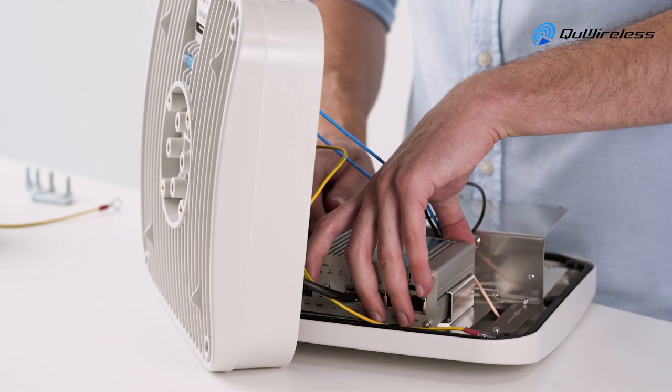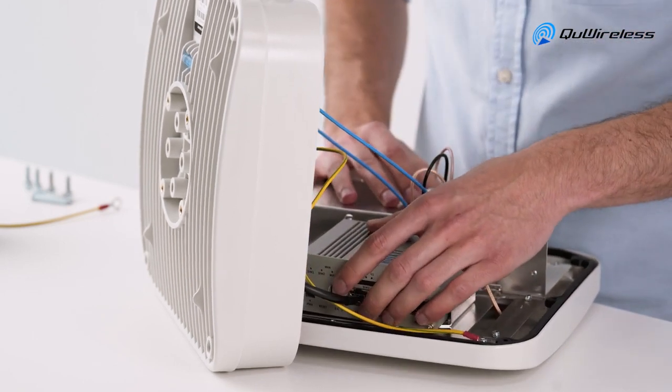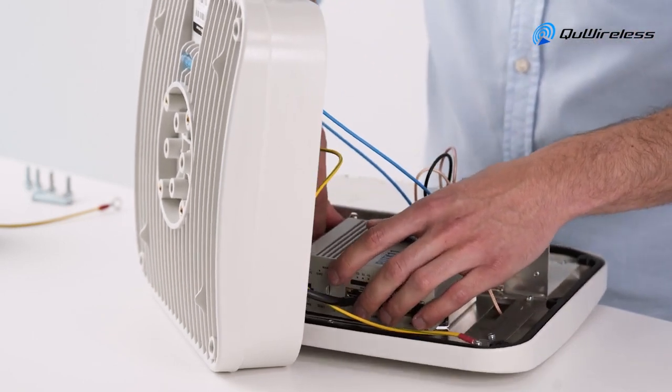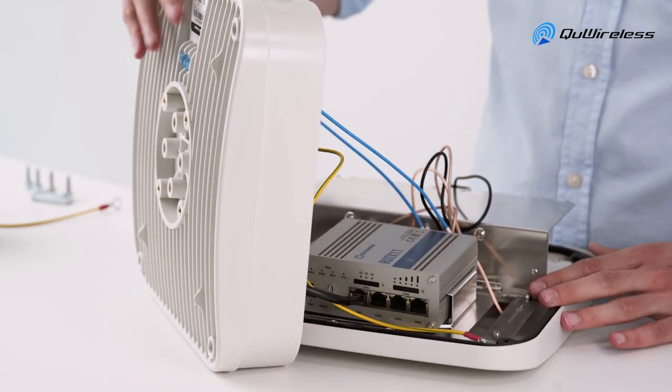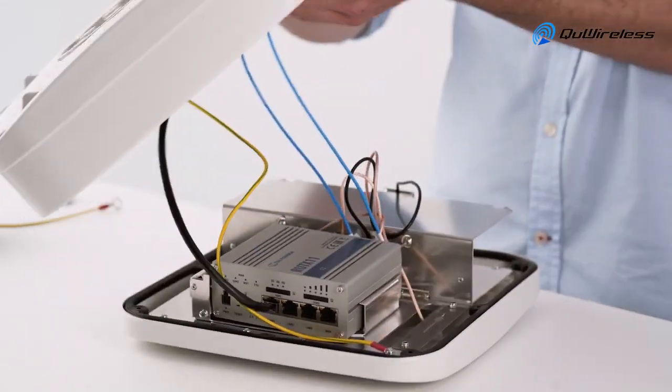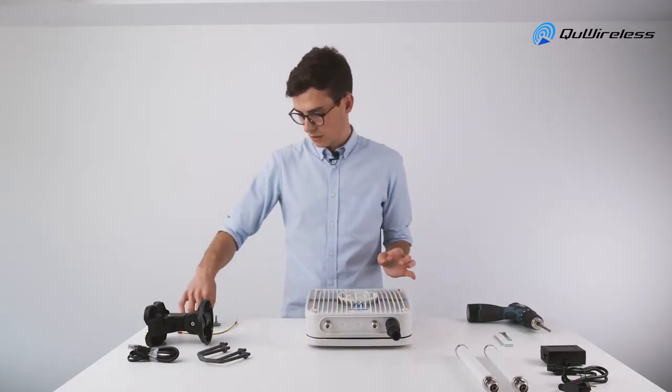In the next step you have to put the radio into the mounting bracket. Now it's time to assemble the enclosure back and screw the four included screws.